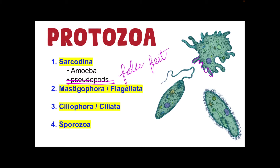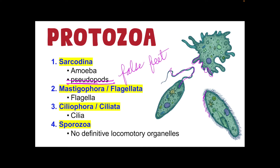For Mastigophora or Flagellata, they have flagella. For Ciliophora or Ciliata, they have cilia — a hair-like projection. For Sporozoa, they don't have definitive locomotory organelles, just like your Plasmodium that causes malaria. Those are the four classes of protozoan parasites.